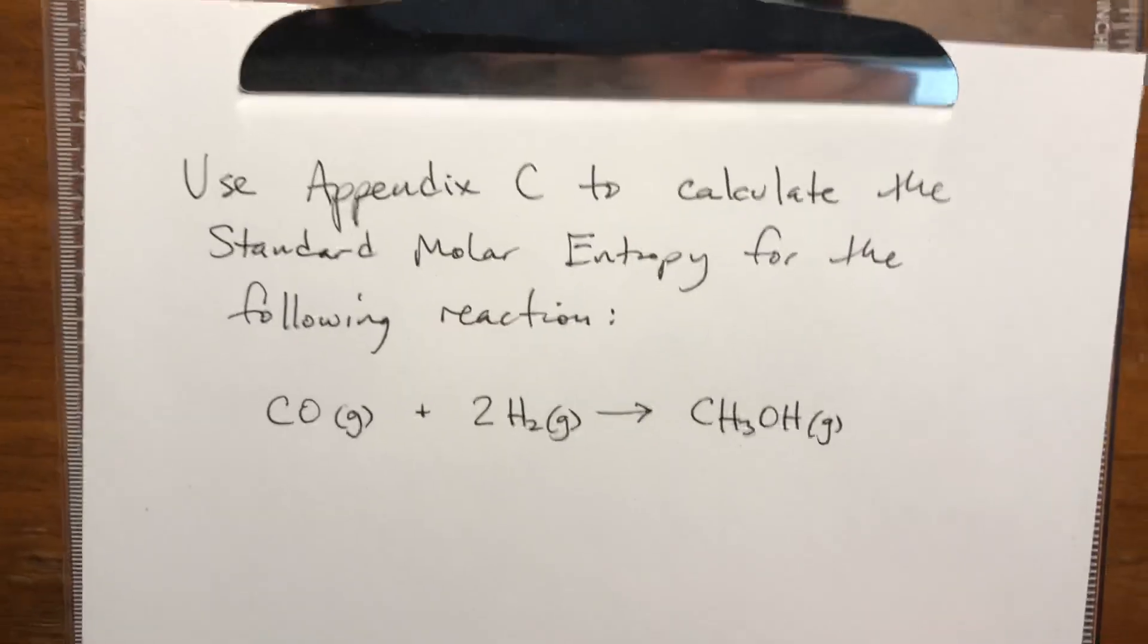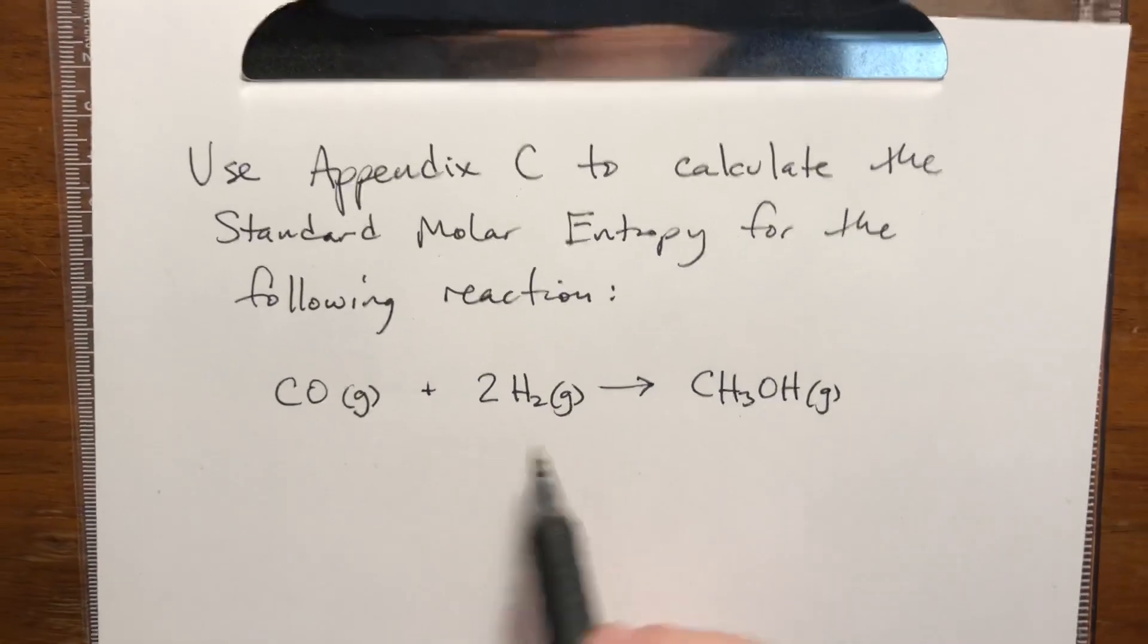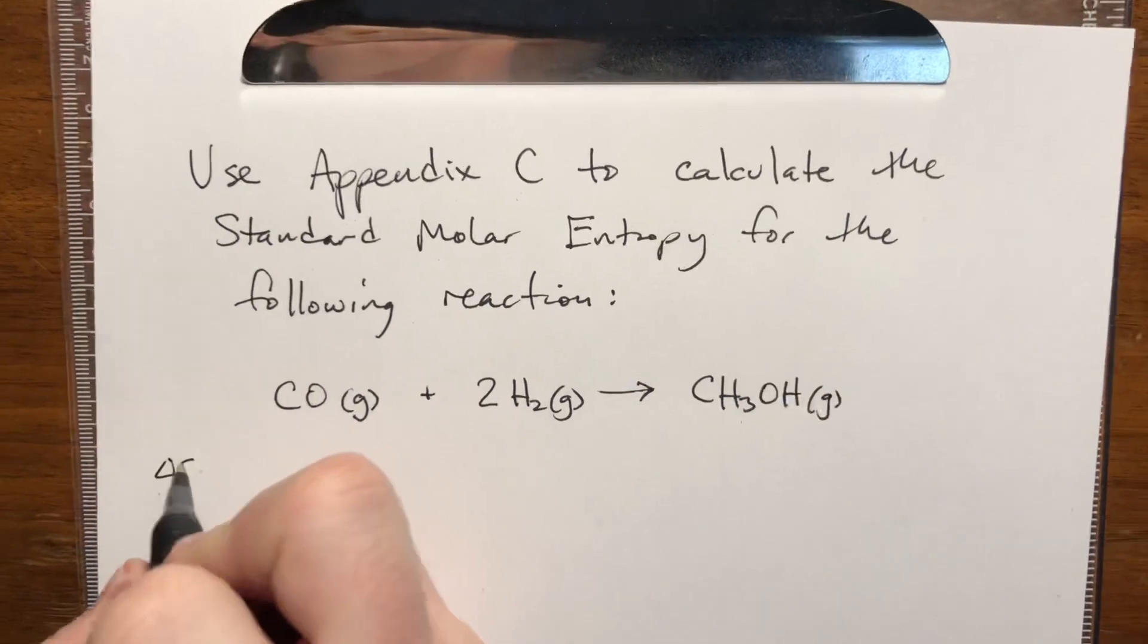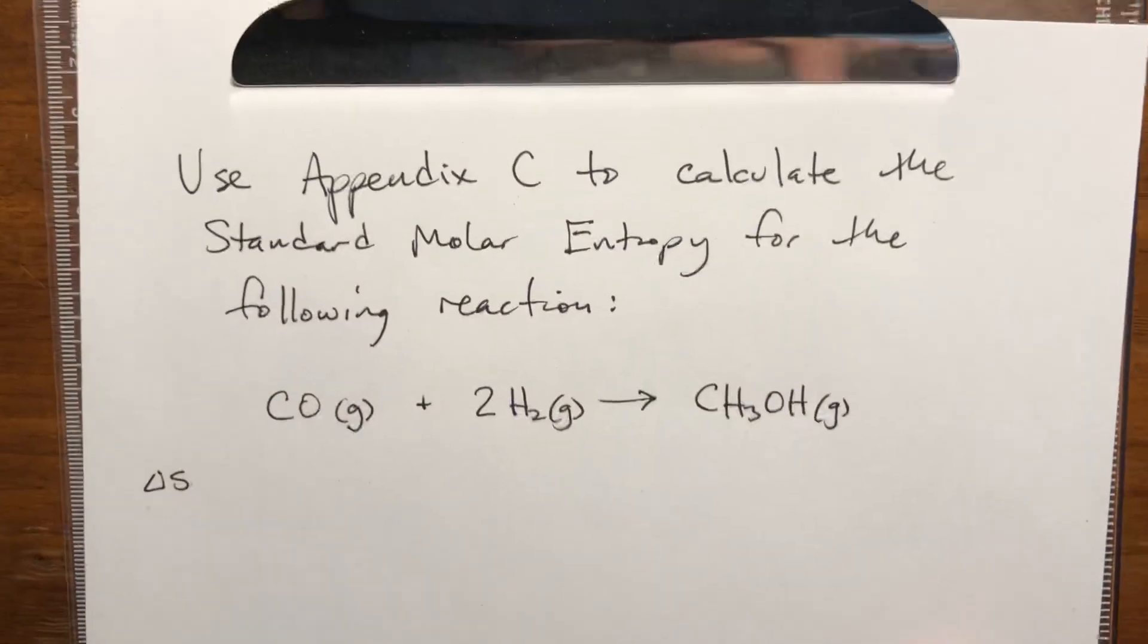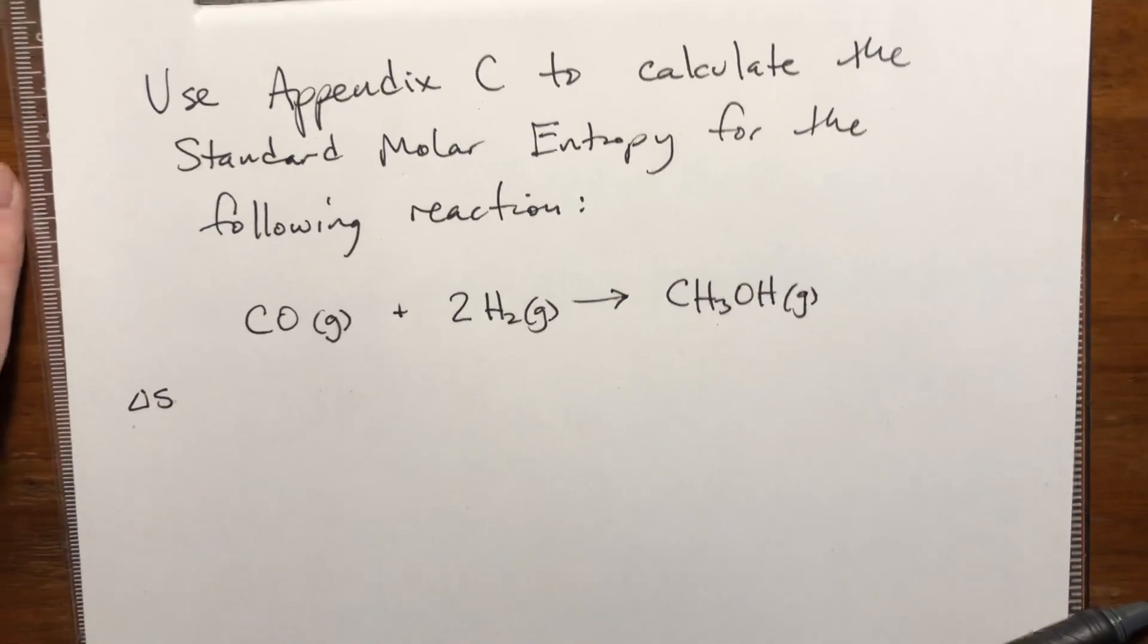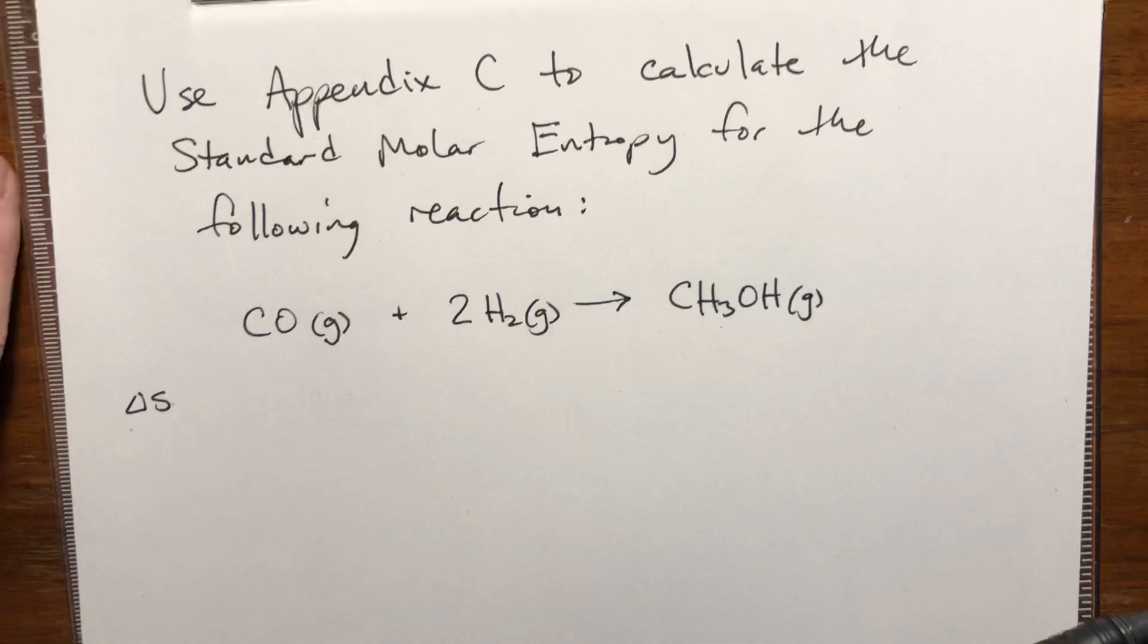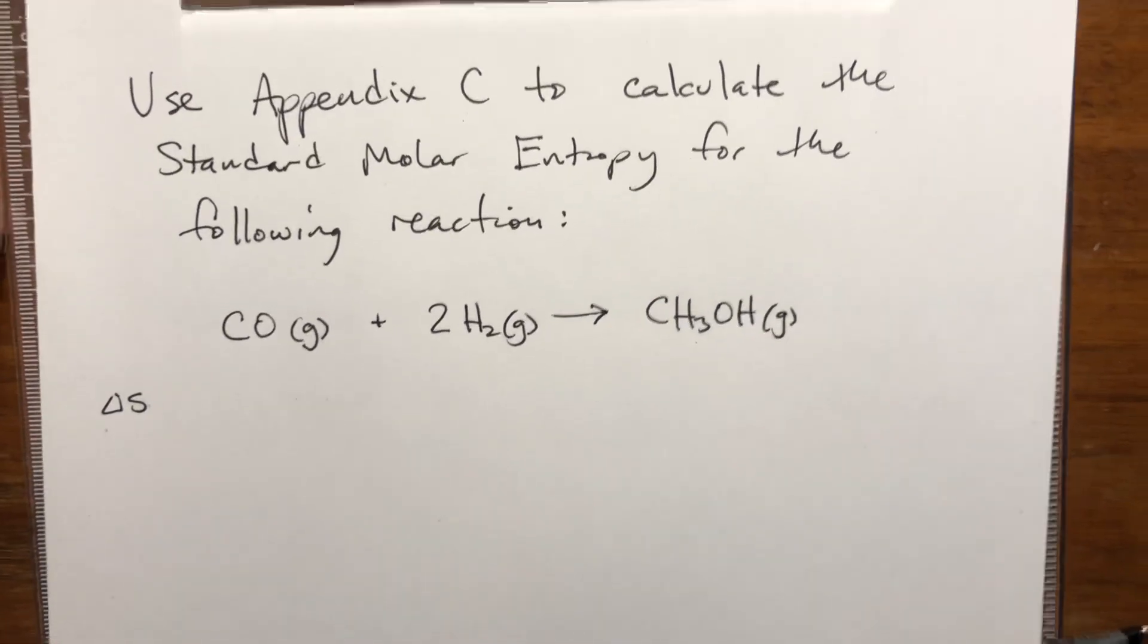Let's use the table to find all the values and plug them in. We're going to look up each of these numbers, the ΔS, from Appendix C, which I added on OnCourse. It's from a different textbook, but presumably your textbook has a similar table. I'm going to be flipping back and forth a lot.